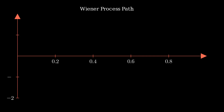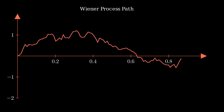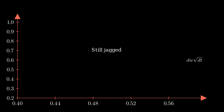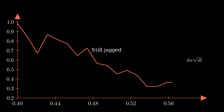Compare that to this Wiener process path, which models stock price randomness. When we zoom into the Wiener process, it's still jagged — no smooth slope here. The jaggedness persists at every level due to the dW term being scaled by the square root of dt. The dt term is infinitesimal, but the square root of dt is not. The dW persists at all time scales and keeps fueling the randomness.